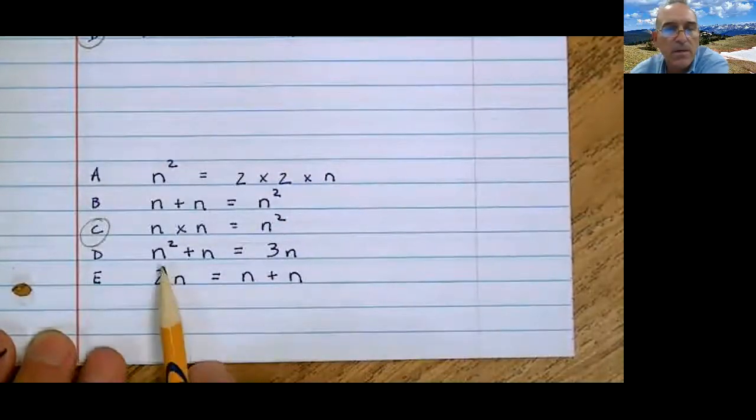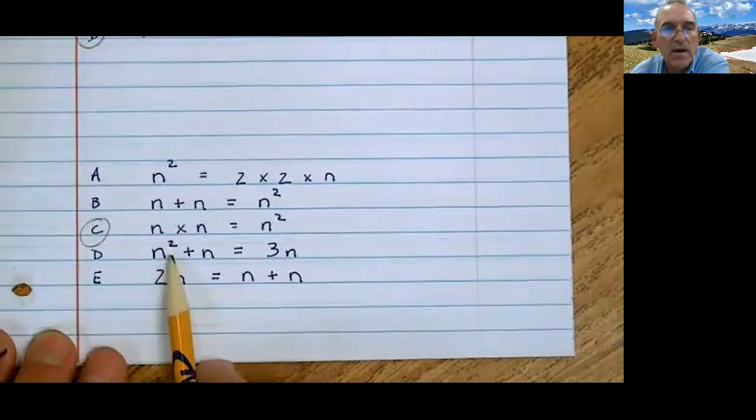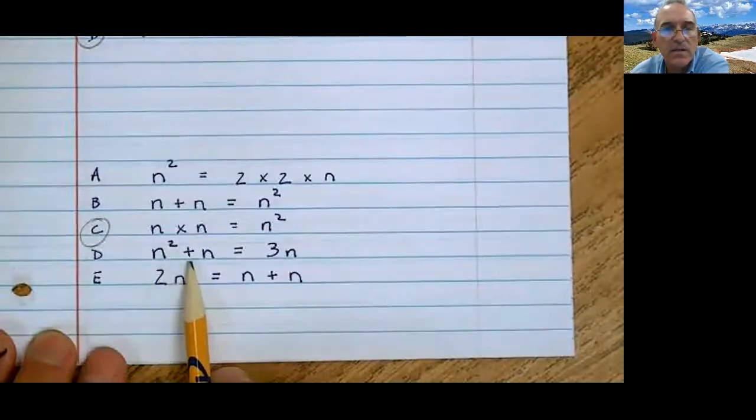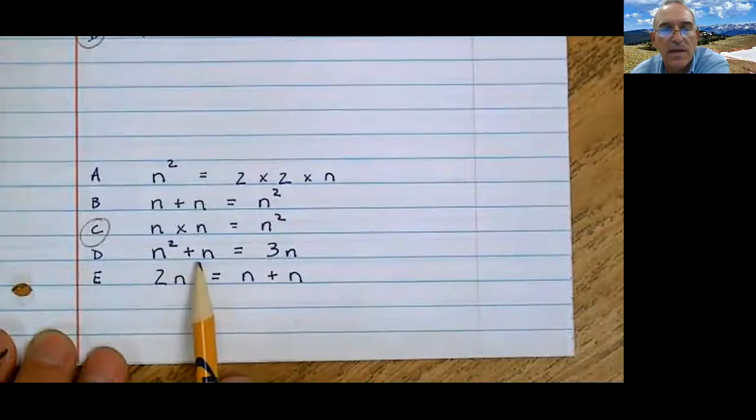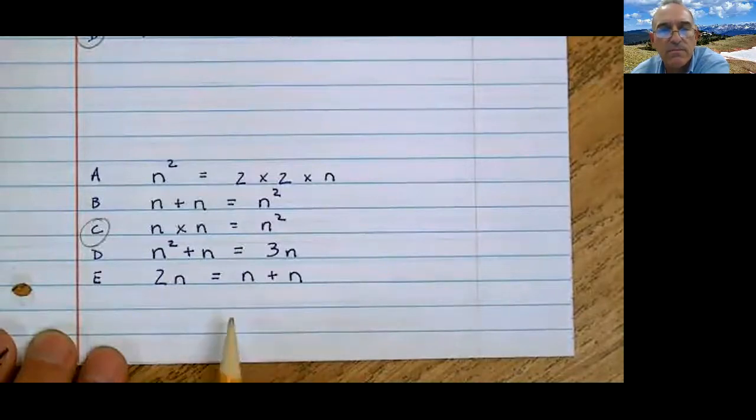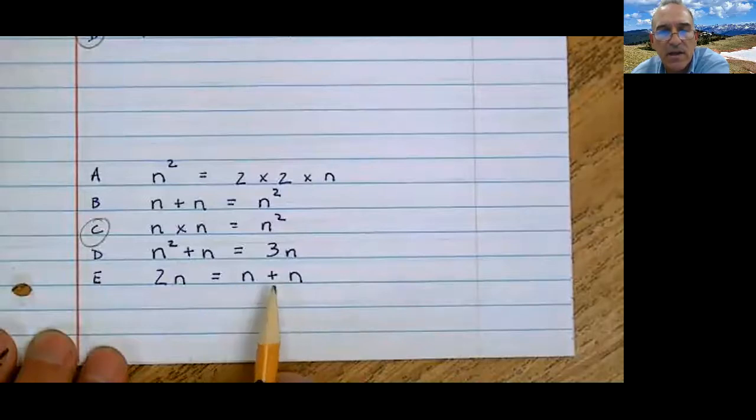Any more? How about this one? n squared plus n, does that equal 3n? It does not, because these are not like terms and they cannot be combined. How about this one? 2n equals n plus n? Yes. Here's 2n here on the right that can be combined, and there it is right there.